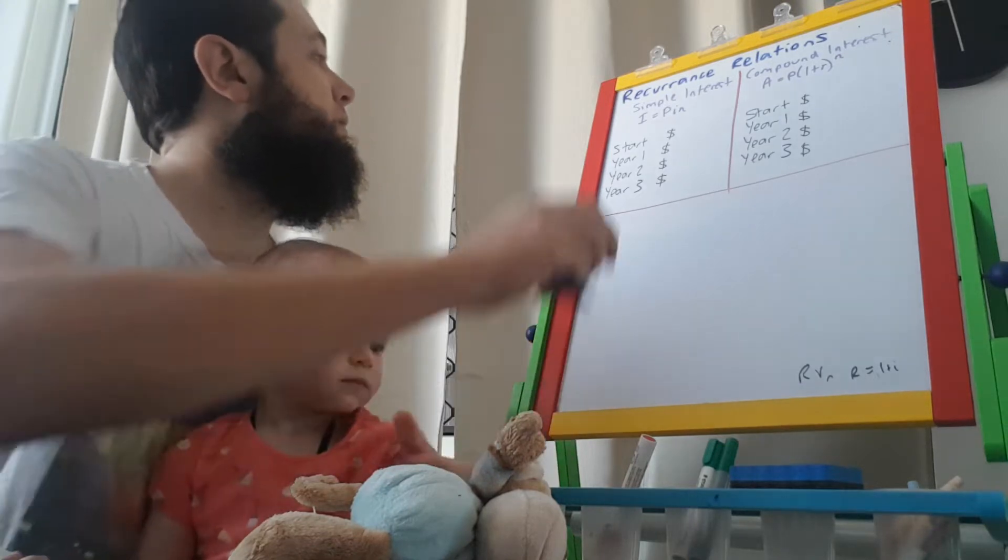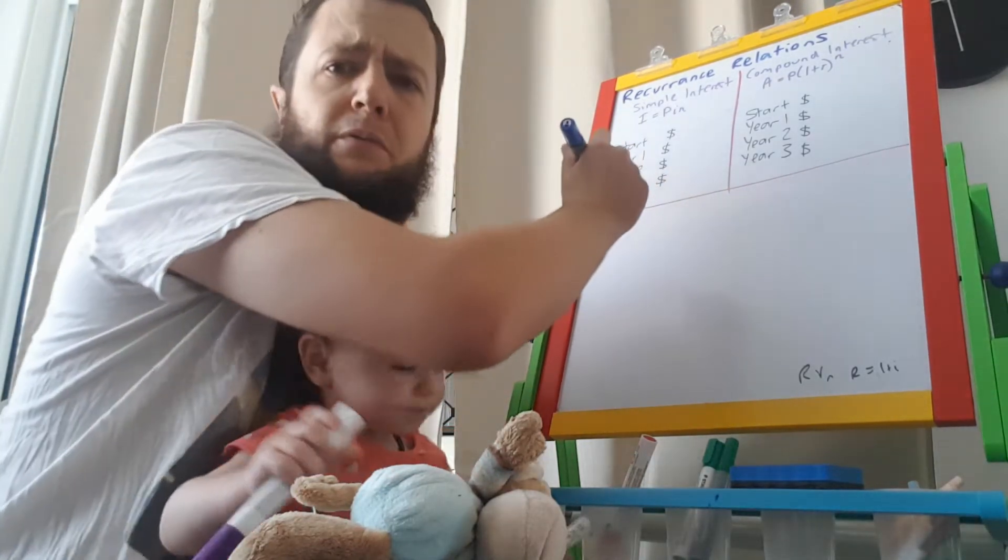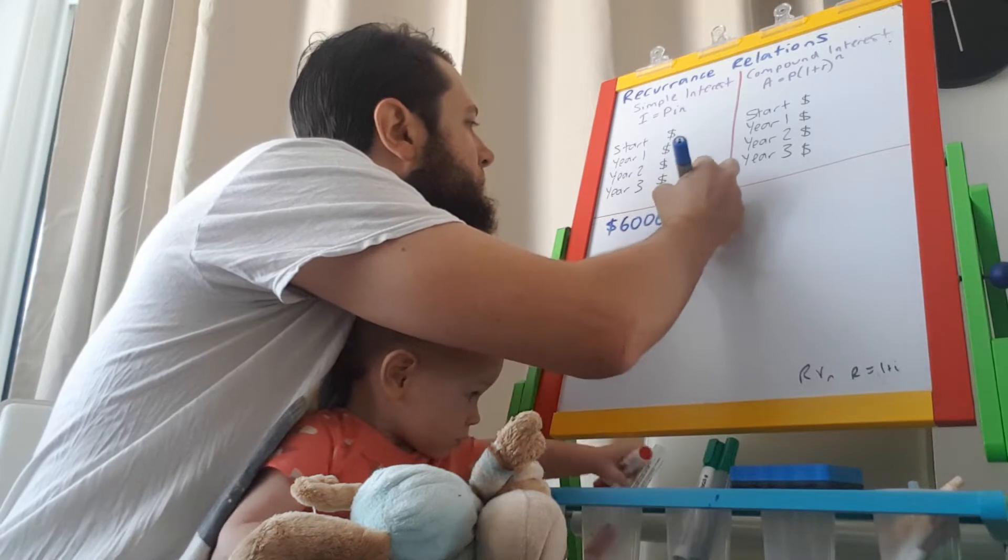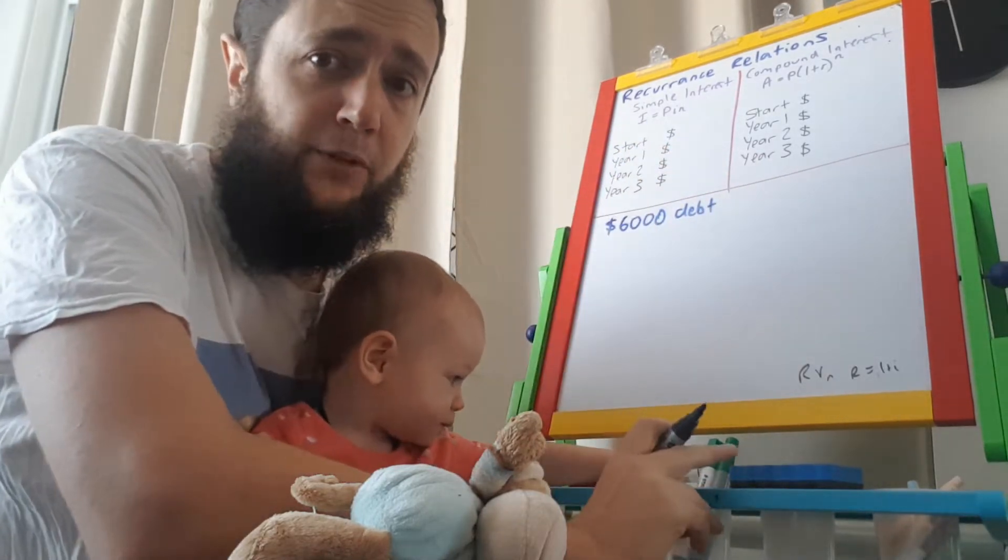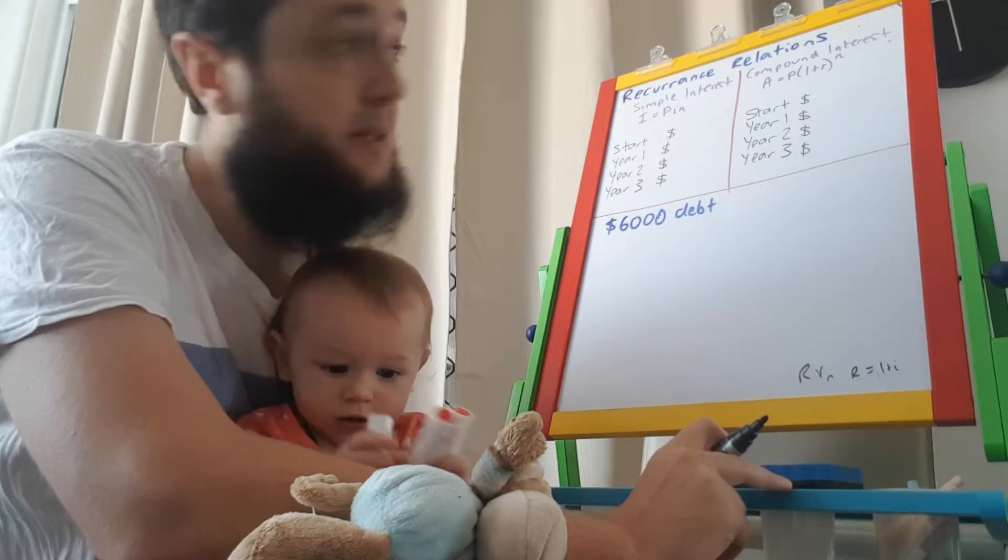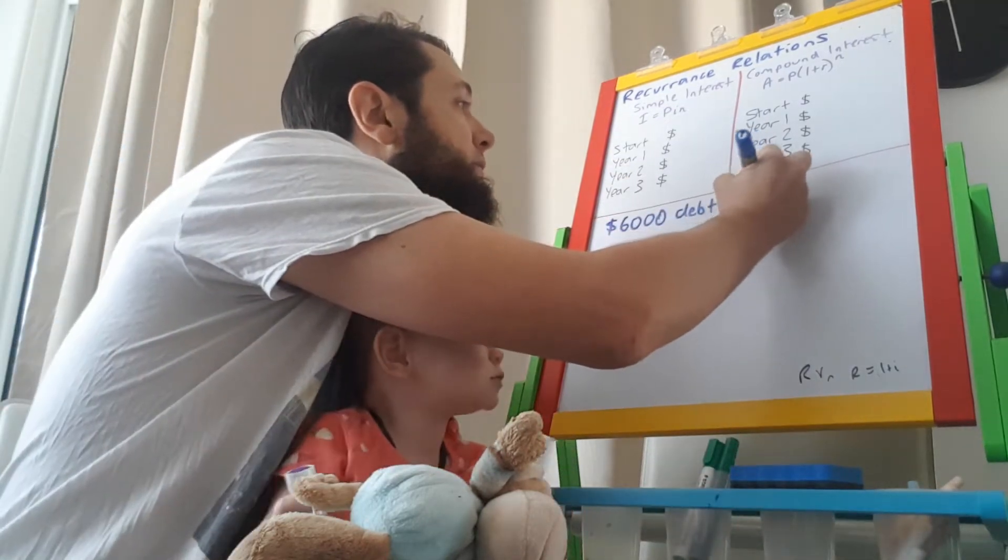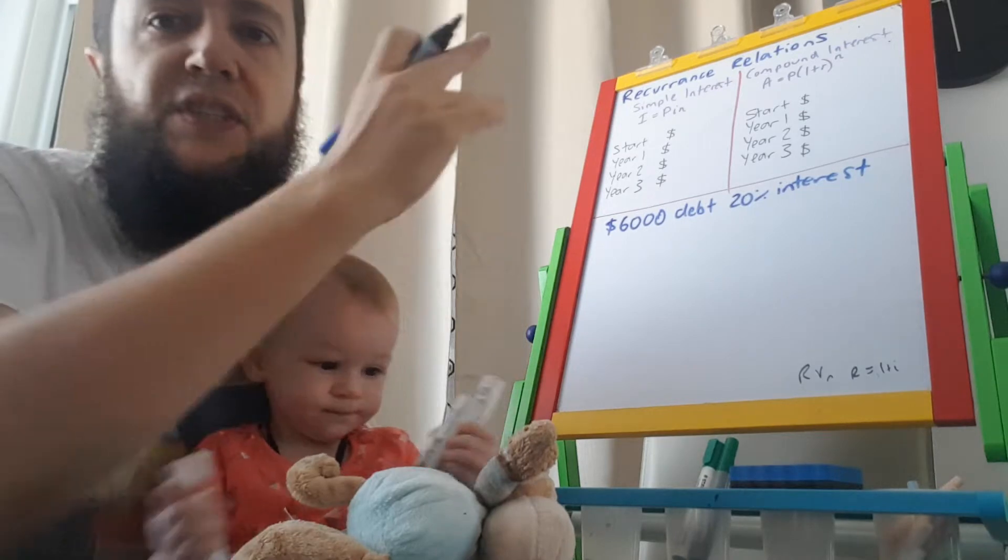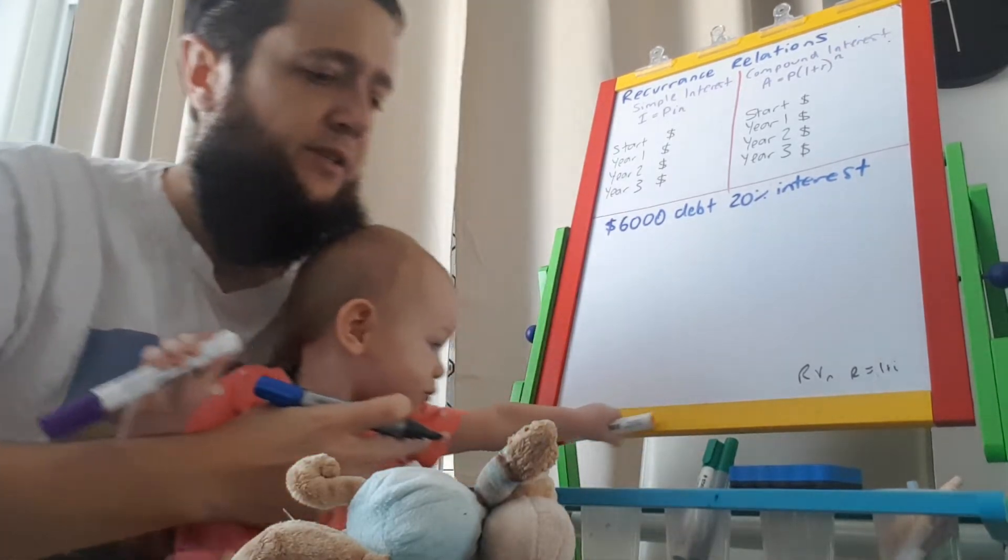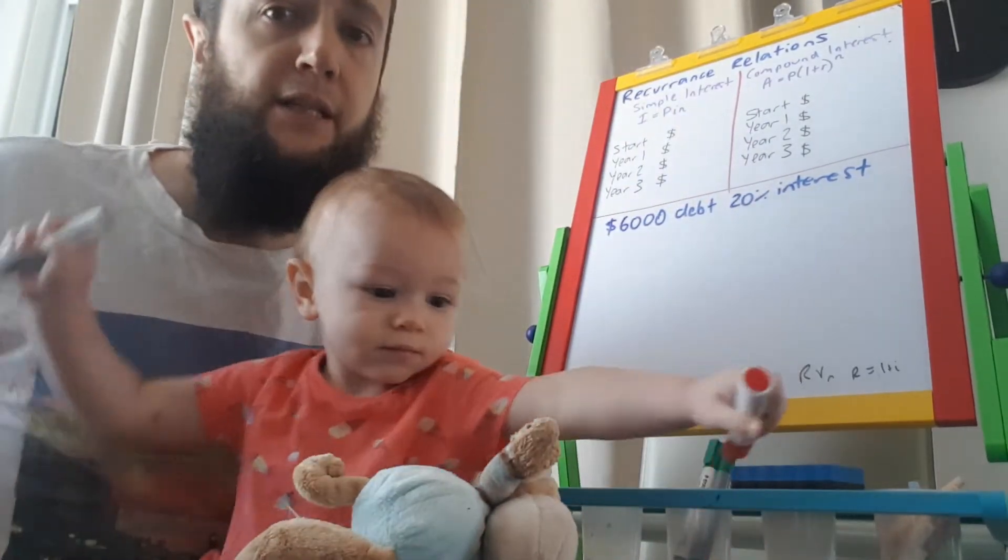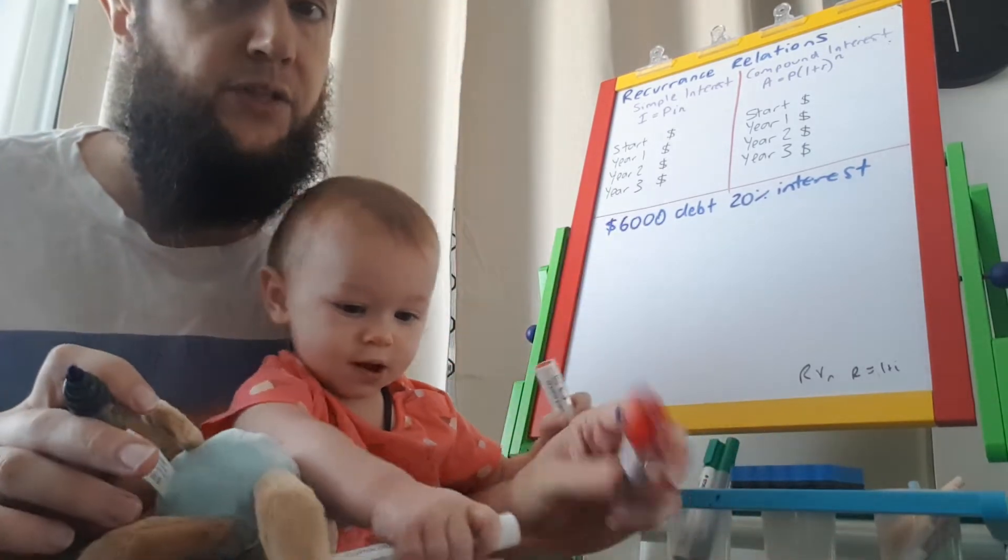All right, so to start with let's say $6,000 debt. You've taken out some bad debt here. The people you've dealt with are not good people. Don't do this in life. They're charging you 20% interest. So we're going to look at both the simple interest and the compound interest situation. The compound interest situation you'll be looking at more later in the week. But I want to make sure we're looking at the idea of recurrence relationship for both situations because it's slightly different.